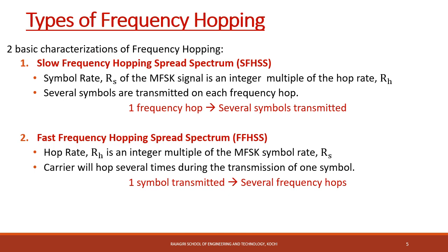There are two types of frequency hopping: Slow Frequency Hopping and Fast Frequency Hopping, determined by the rate at which the frequency is hopped. In Slow Frequency Hopping, hopping takes place at a slower rate — meaning in one frequency hop, several symbols will be transmitted. In Fast Frequency Hopping, it hops at a faster rate — one symbol is transmitted across different frequency hops. So in slow FH, the symbol rate is an integer multiple of the hop rate, whereas in fast FH, the hop rate is an integer multiple of the symbol rate RS.